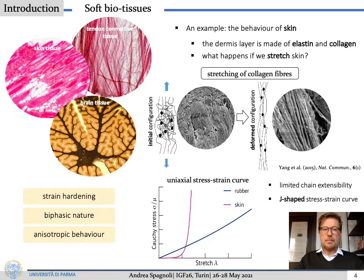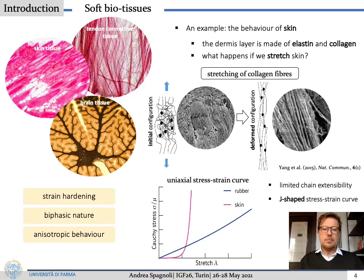There are some biological tissues like skin, tendons, and brain which behave like soft materials. They are characterized by large strain, strain hardening, biphasic nature, and anisotropic behavior. From a micro-scale point of view, for instance, skin is characterized by collagen fibers which stretch under loading and tend to align to the loading axis. This produces a response in terms of stress versus stretch characterized by a J-shaped curve, which is quite different from that of a rubber material.